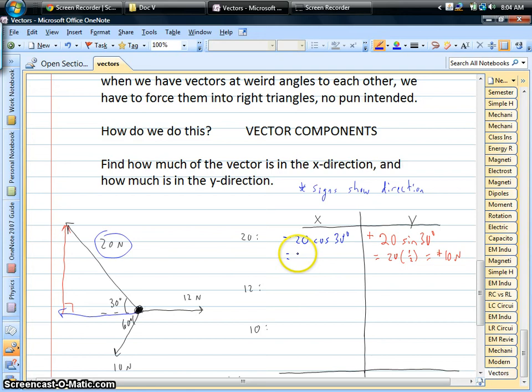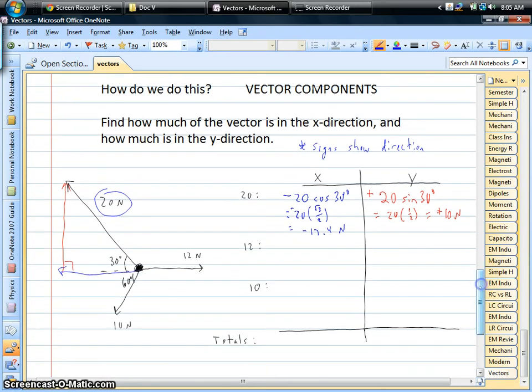Okay, cosine 30 is root 3 over 2. Make this negative. And this turns out it's something like about a negative 17.4 or so newtons, if we round off. You can check your calculator for that. Okay, so we found the x and y components of that 20 newton force. We have to do this for each individual force. That's why I recommend making this table every single time. It keeps it nice and neat. You don't have numbers and things all over your paper. And it'll make things easier to do our final step, which we'll see in a minute.